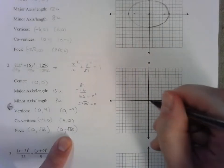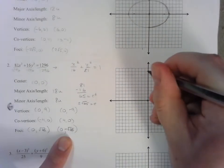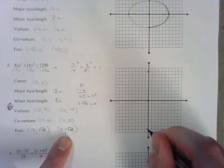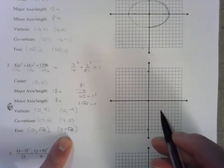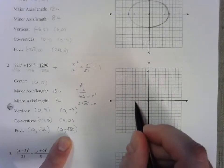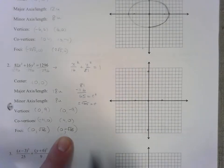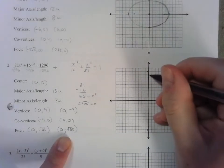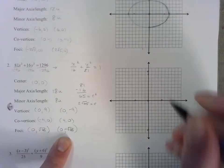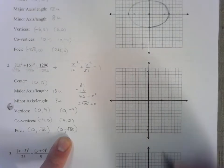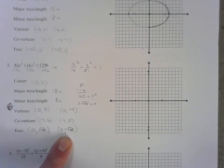So when we sketch our graph, (0,0) is the center, 9 units up, 9 units down, these are your vertices. 4 units left and 4 units right. So 4 to the right, 4 to the left, these are your co-vertices. The square root of 65 is close to 8, but a little bit more. And close to -8, but a little bit farther away. So those are your two foci above here.